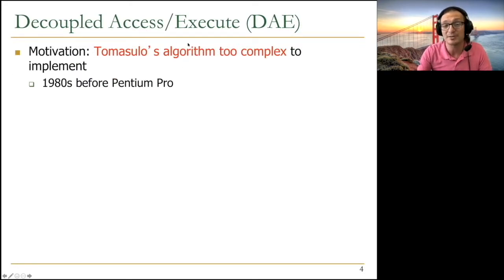Motivation was Tomasulo's algorithm is too complex to implement. This was 1980s before Pentium Pro. Nobody implemented it, and people suggested we don't want this much complexity in systems. VLIW can be positioned in a similar way also, because VLIW clearly has a very different philosophy than out-of-order execution and Tomasulo's algorithm.